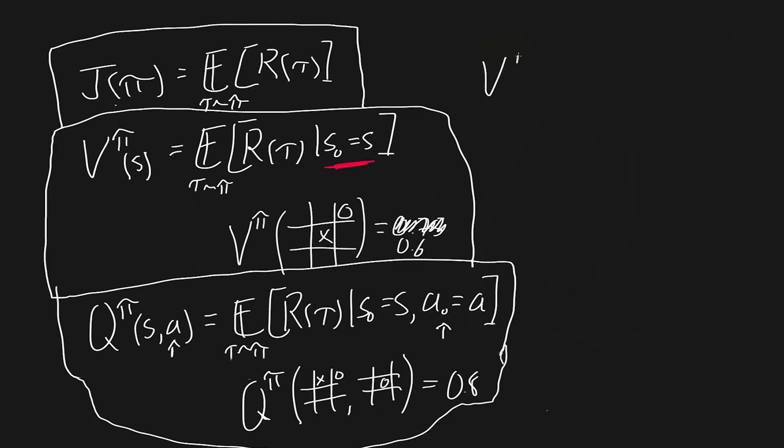And there are cases where all of these are equal. For example, the value of a state equals J of this policy if S equals a distribution over starting states, or that would be P0. So essentially all this is saying is the value is just equal to this expected return if the starting state is always the distribution over all the starting states we're expecting.